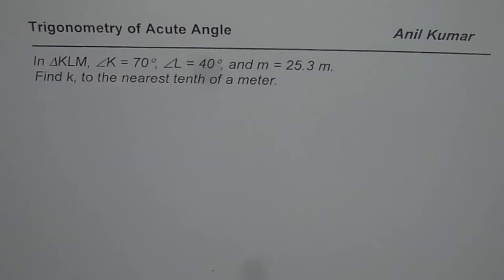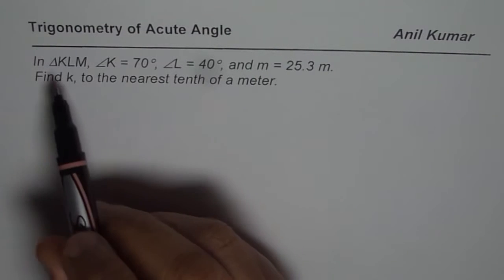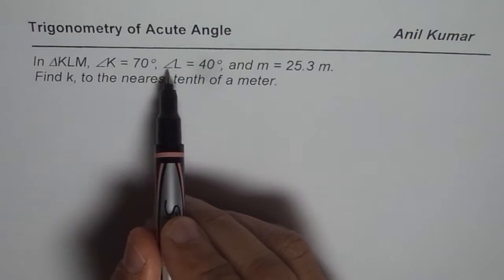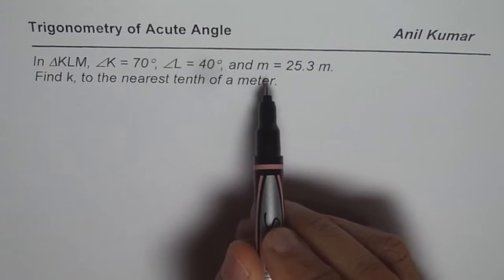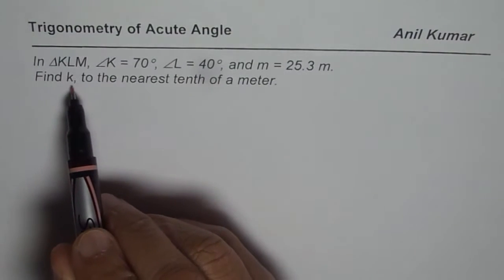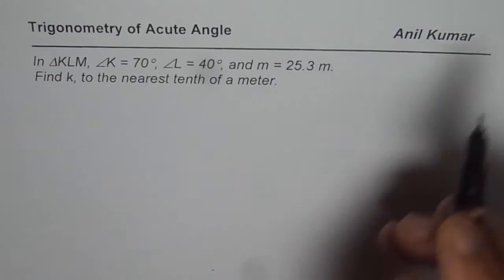I'm Anil Kumar and now let us understand how to solve acute angle triangles using trigonometry. In triangle KLM, angle K is 70 degrees, angle L is 40 degrees, and M is 25.3 meters. Find K to the nearest tenth of a meter.